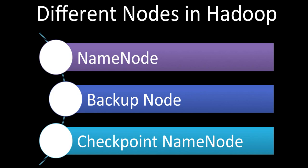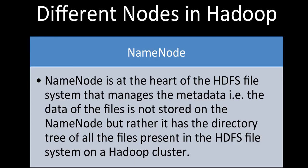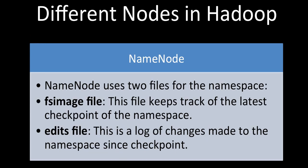The NameNode is at the heart of the HDFS file system. It manages the metadata — all the data of the files is not stored on the NameNode itself, but rather on other nodes. However, the NameNode holds the directory tree of all files in the HDFS file system on a Hadoop cluster. Whenever we store some data, it passes through the NameNode, which tracks where each piece of data is stored.